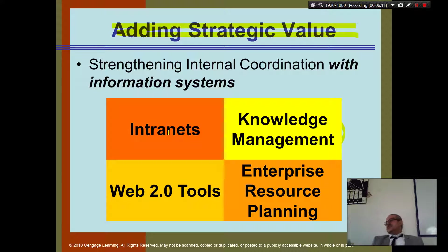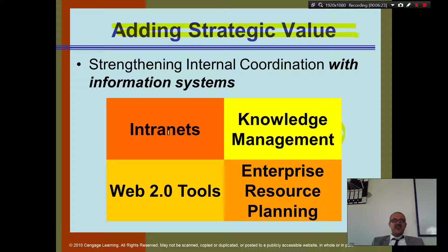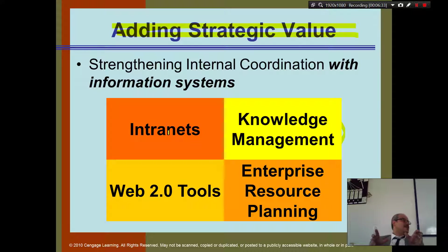The internet connects everyone to the whole world. But an intranet is only accessible inside your company. For example, if you go to CAC Bank, their network is probably not connected to the internet — they have their own private network called intranet. Everything happens inside the company, nothing to do with outside.